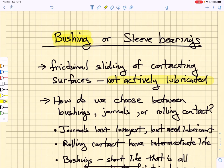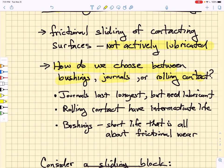How do we choose whether we want to use bushings, journals, or rolling contact? Well, there's no doubt journals, if cared for properly, will last the longest and will have the lowest coefficient of friction, but you need a lubricant for them. You need to be able to supply that lubricant and filter that lubricant.